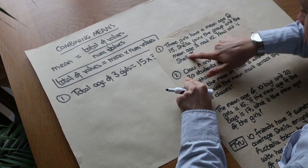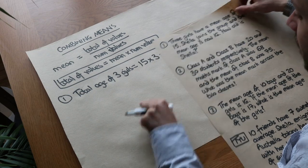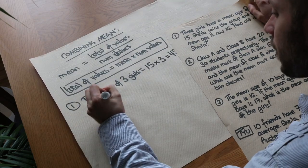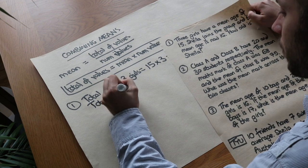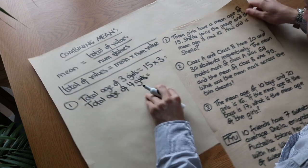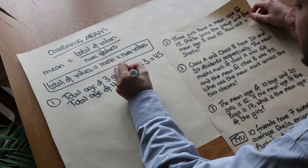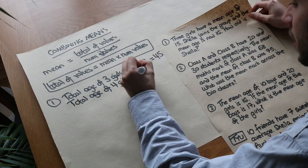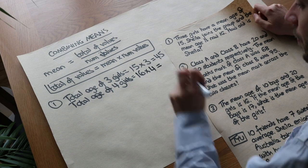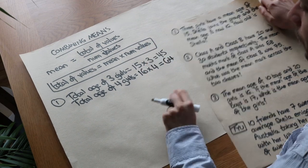Now Sheila joins the group and the mean age is now 16. We can think of the total age of four girls. The total age of the four girls is the mean times the number of values — the mean is now 16 and the number of people is now 4, so 16 times 4 is 64.